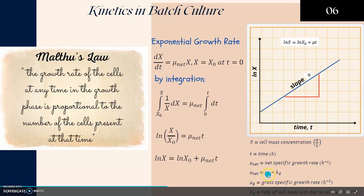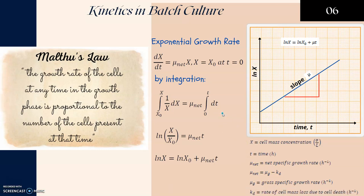μ_net here refers to net specific growth rate where μ_net equals μ_g minus k_d. μ_g is the growth specific growth rate and k_d is rate of cell mass loss due to cell death. If we ignore the k_d, then μ_net is only equal to the growth specific growth rate which is μ_g.